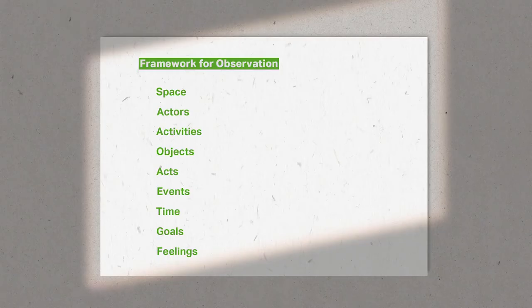And what do we observe? Everything. People, their activities and interactions with each other, the physical environment and the objects in it and the way in which people interact with them. But everything is a difficult brief to follow and can be quite overwhelming. There are some frameworks that help us.